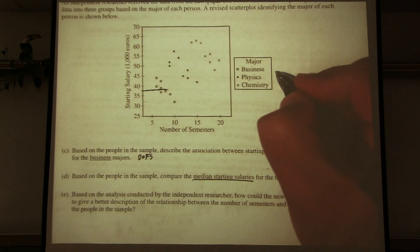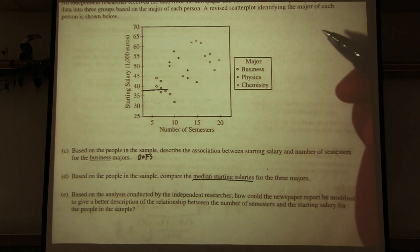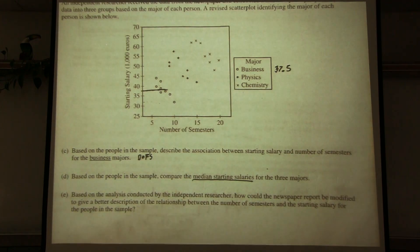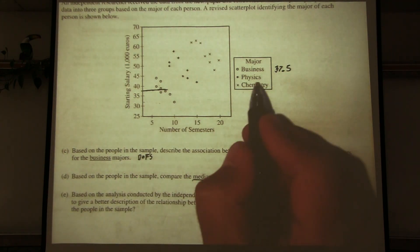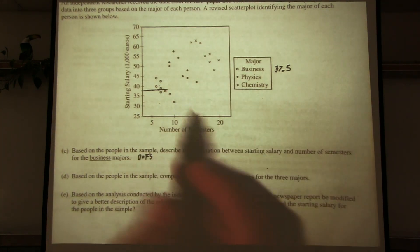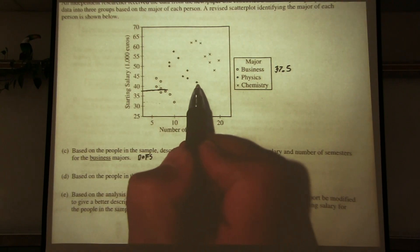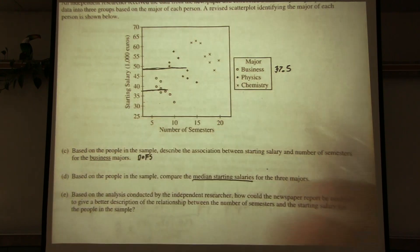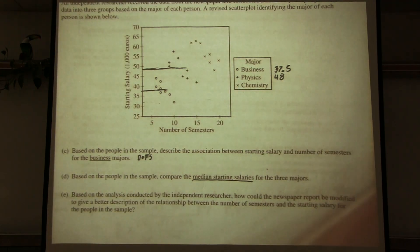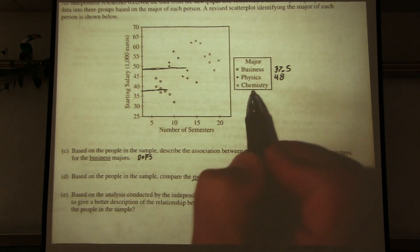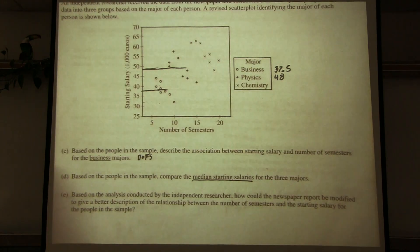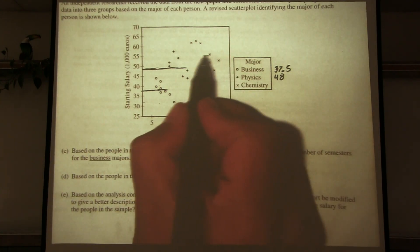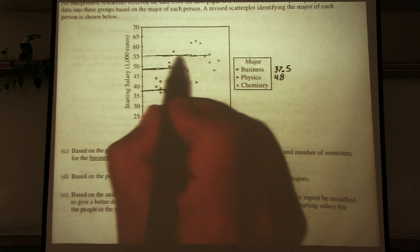For physics majors, there are also eight, so the median is between the fourth and fifth lowest values — counting one, two, three, four and five — between those two, that's about 48 thousand euros. For chemistry majors, also eight: ordering from lowest — first, second, third, fourth, fifth — the median between those two is right around 55 thousand euros.